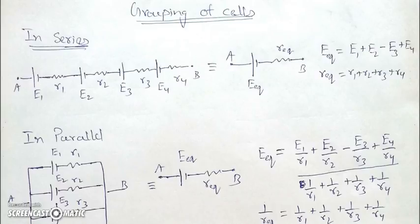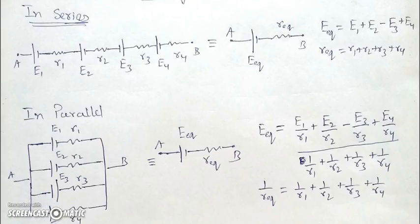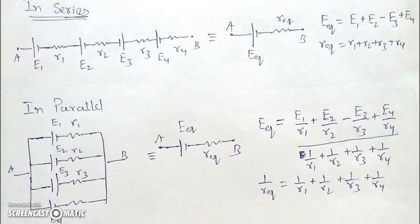In this video we'll be looking at grouping of cells. Cells can be grouped in many ways, of which two are famous: in series and in parallel. When cells are in series, they are connected such that the same current passes through each of them.